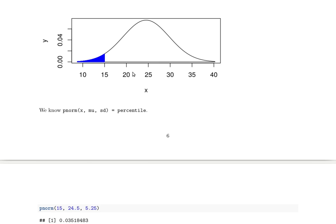So the pNorm of 15 in a normal distribution with the mean of 24.5 and a standard deviation of 5.25 will be about 3.5 percent, as calculated here.